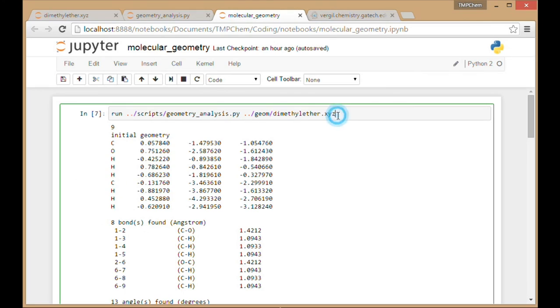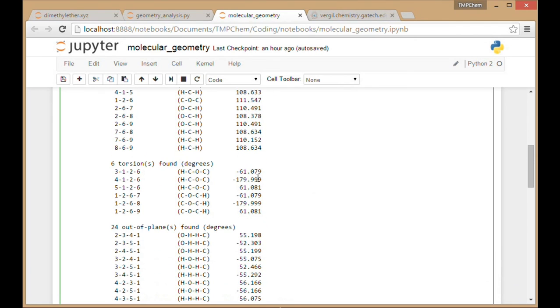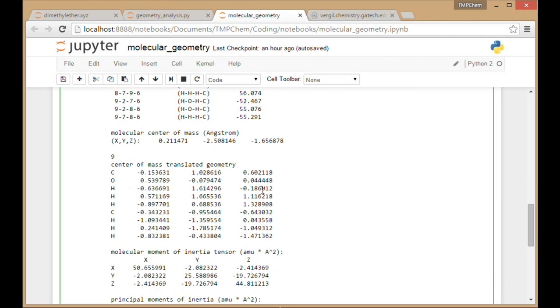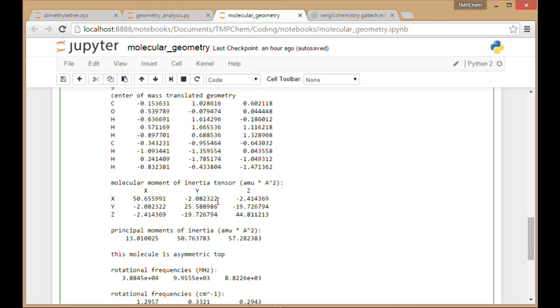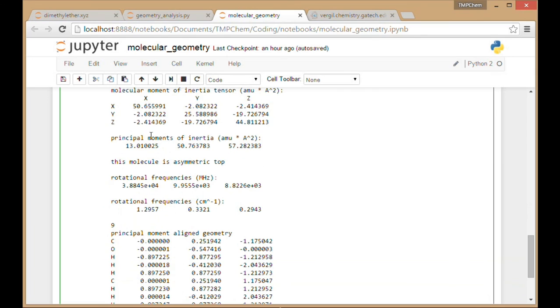Taking that value for dimethyl ether, printing out all the values we have from before. Initial geometry, XYZ coordinates. Finds 8 bonds, 13 bond angles, 6 torsions, 24 out of planes. The center of mass. We translate to the center of mass. Then we do the moment of inertia tensor. We're almost diagonal, but we have to do a little bit more rotating down there. We see some off-diagonal components.